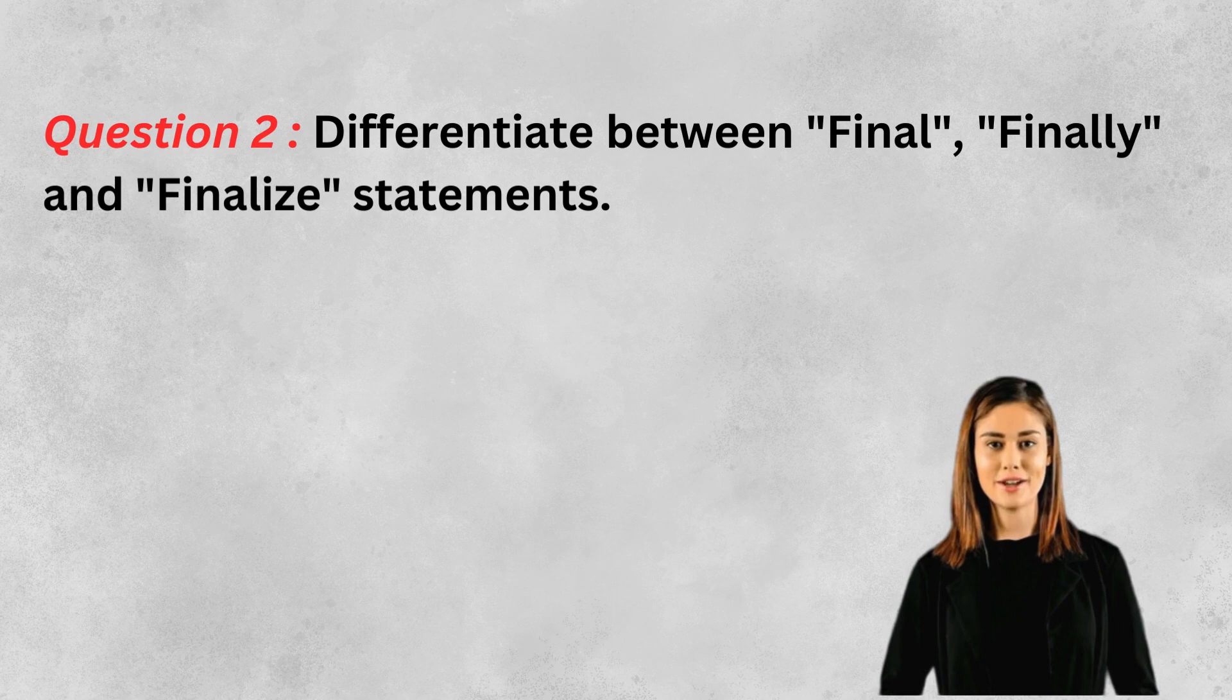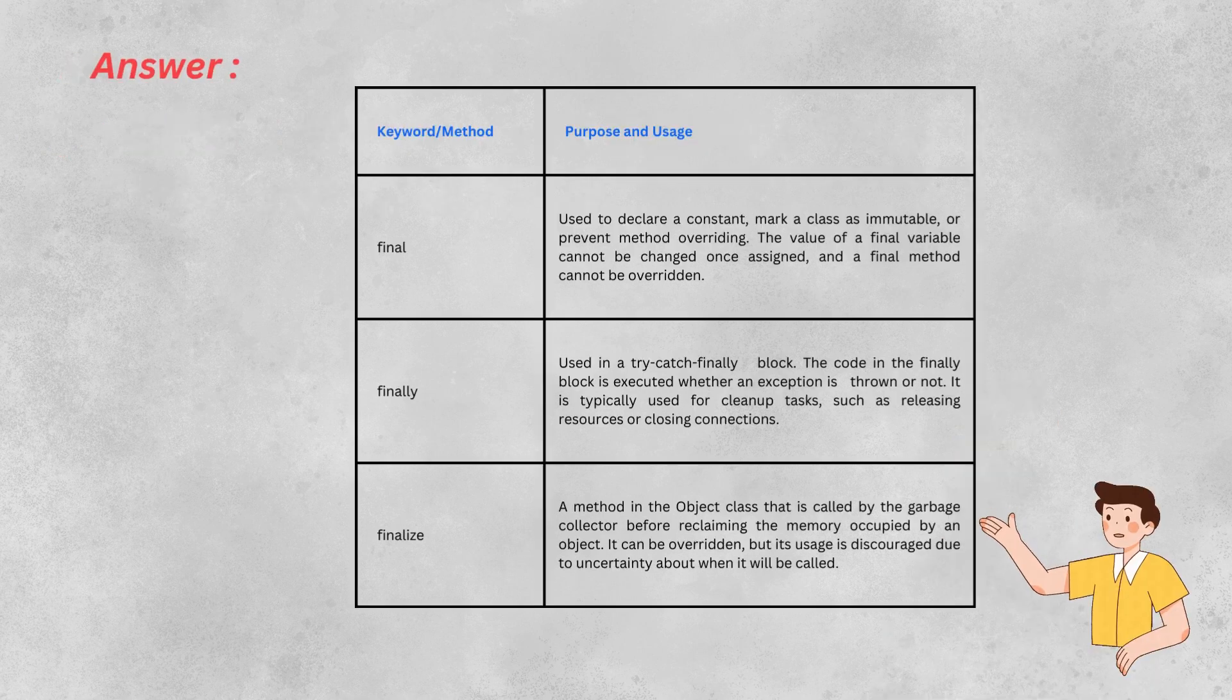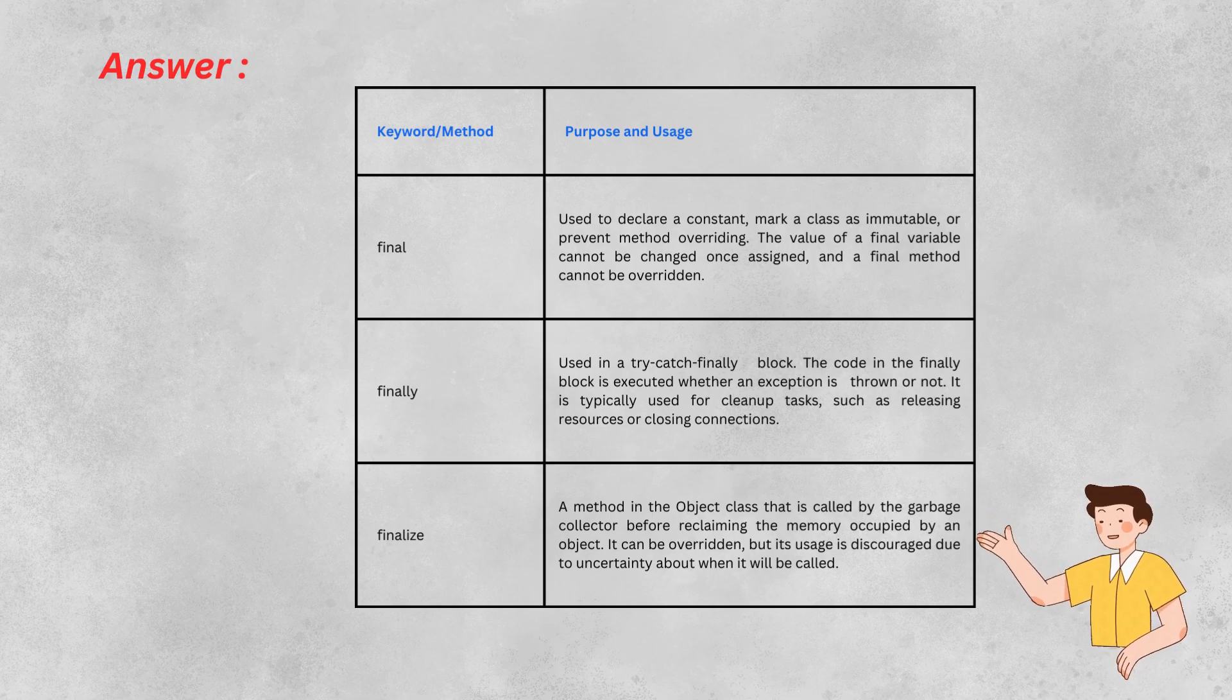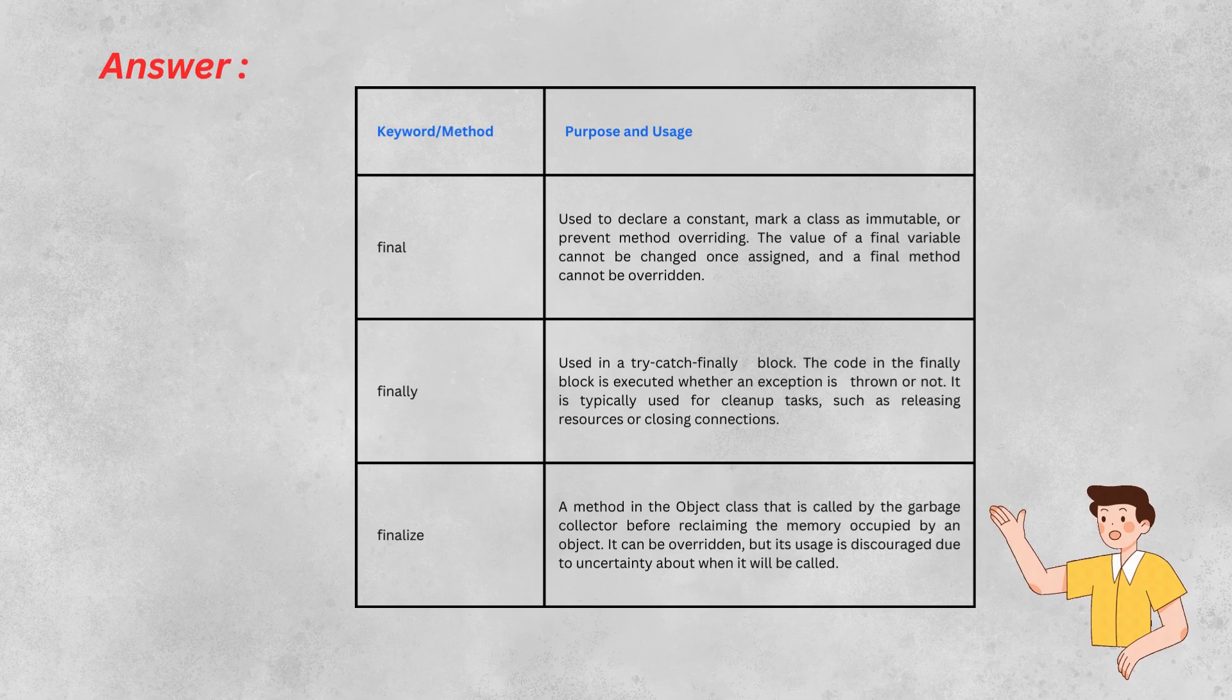Final declares constants, marks immutable classes, or prevents method overriding. Finally executes code in a try-catch-finally block, useful for cleanup tasks. Finalize is an Object class method called by the garbage collector before memory reclamation, but discouraged due to uncertainty.